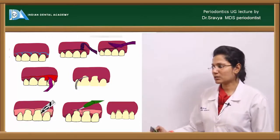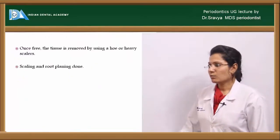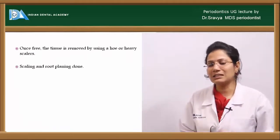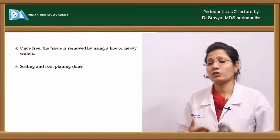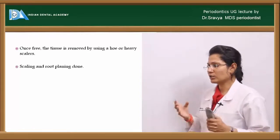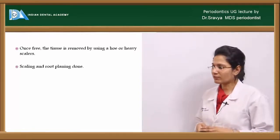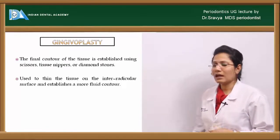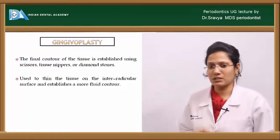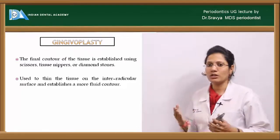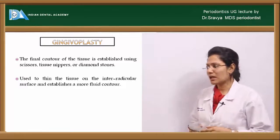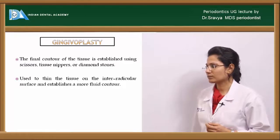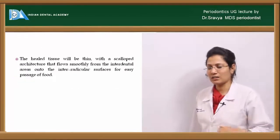Once the tissue is freed, use a scaler or curette to remove the interdental tissue freed by the incisions, then perform scaling and root planing. If needed, perform gingivoplasty — the final contouring of tissue using scissors, tissue nippers, or diamond stones — to thin the tissue on the interradicular surface and establish a proper ideal contour.